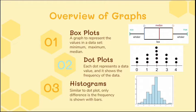So just an overview of the graphs so you're prepared. The first one is a box plot, and what this shows is the minimum, the maximum, and the median of a data set. Next we have dot plots, where each dot represents a data value and shows the frequency of the data at each point. A histogram is essentially the same thing as a dot plot, but the only difference is the frequency is shown as a bar graph.